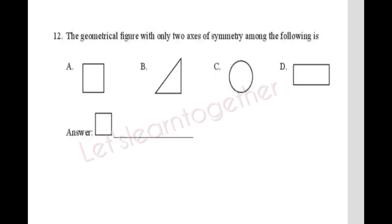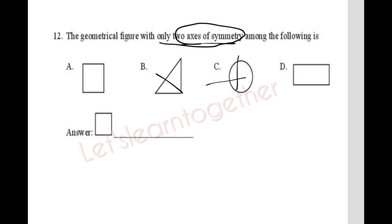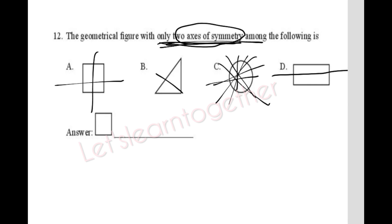Question 12: Which geometrical figure among the following has only two axes of symmetry? A rectangle has exactly two axes of symmetry — one horizontal and one vertical. So the answer is option D: rectangle.